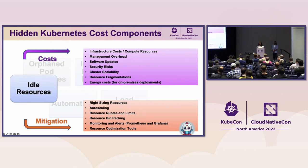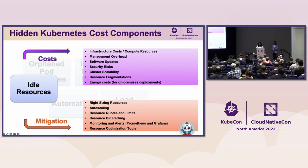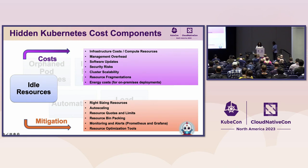For on-premises deployments, running idle hardware consumes electricity and generates heat, leading to increased energy costs. On the back end, this can increase the need for additional cooling infrastructure. To mitigate, you should implement resource requests and limits, and enforce policies to prevent over-provisioning.